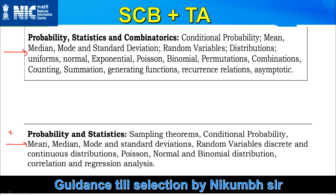This syllabus is for Scientist B and this one is for Technical Assistant A. For Scientist B, the first important thing you need is a solid understanding of probability theory. Once you have that foundation, you can move into conditional probability. Mean, median, and mode are easy, but probability theory is essential because you will apply it to random variables, which many people don't fully understand.